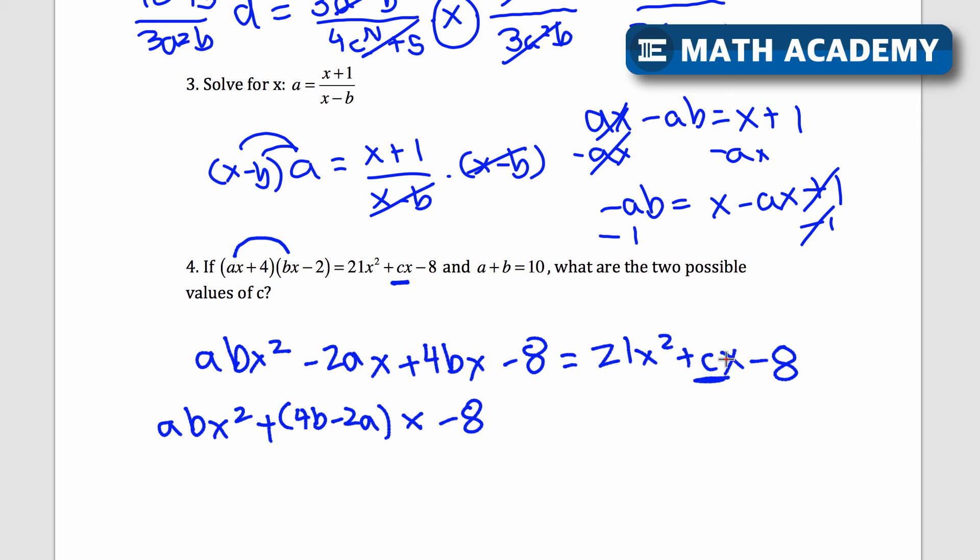Well, c is how many x's I have on the right side here. So I want to find out how many x's I have on the left side. What I can do is factor out an x from here. And altogether, I would have 4b minus 2ax's. 4bx minus 2ax, combine them as 4b minus 2ax's. I also have abx squared still. And I also have negative 8. So how many x's do I have on the right? It's c. How many do I have on the left? It's 4b minus 2a. If I figure out 4b minus 2a, I'll figure out what c is. Because they're both talking about how many x's there are.